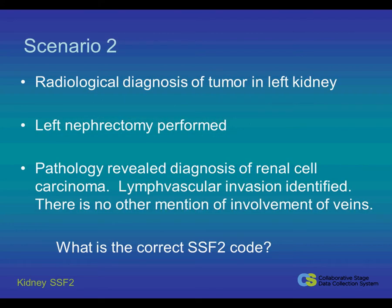In this next scenario, we have a patient radiographically diagnosed with a tumor in the left kidney. A left nephrectomy is performed, which confirms a diagnosis of renal cell carcinoma with lymph vascular invasion present. There is no other mention of involvement of veins on the operative report or pathology report. For this case, what is the correct code for CS Factor 2?